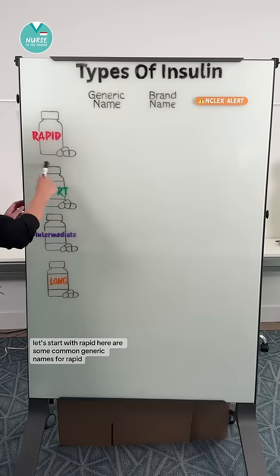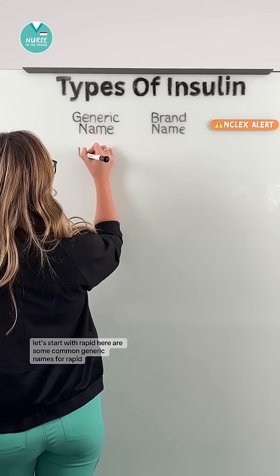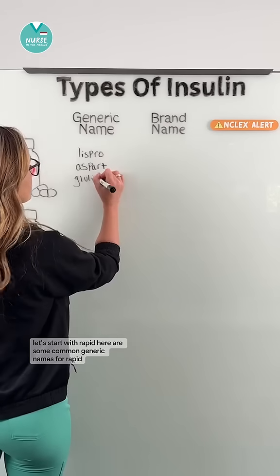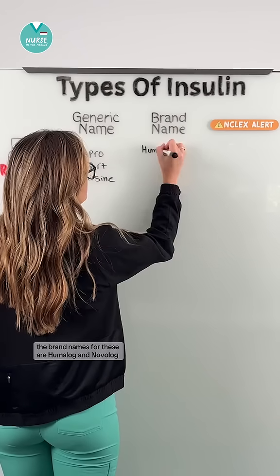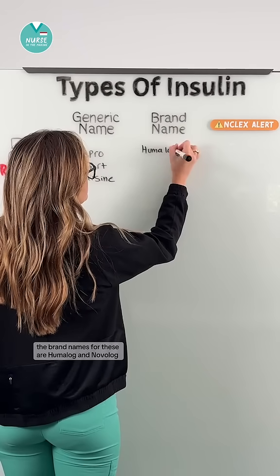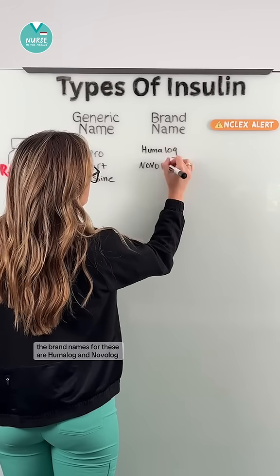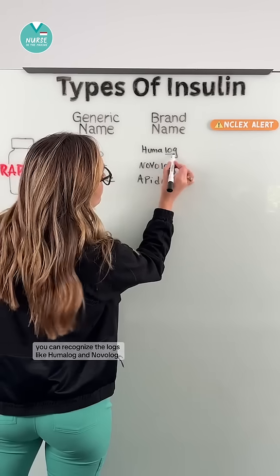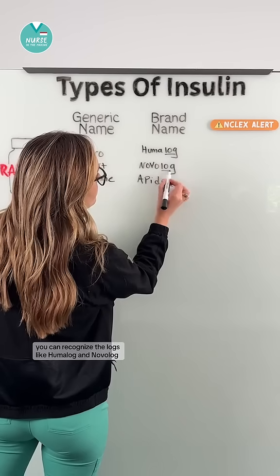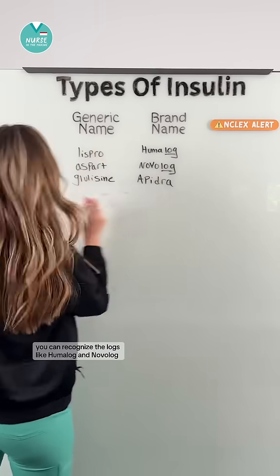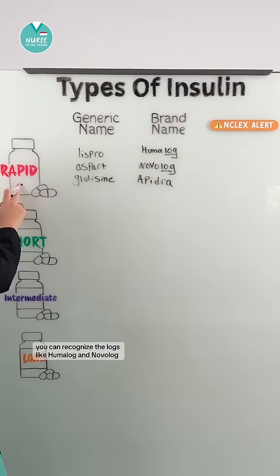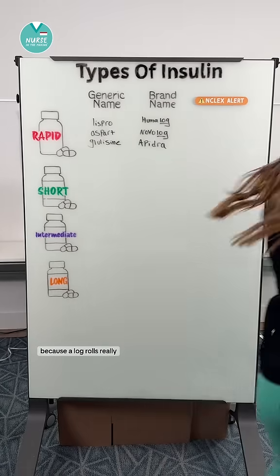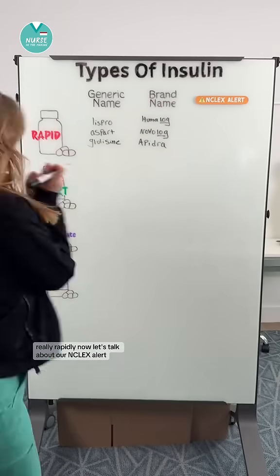Let's start with rapid. Here are some common generic names for rapid. The brand names for these are Humalog and Novolog. You can recognize the logs — like Humalog and Novolog — because a log rolls really, really rapidly.